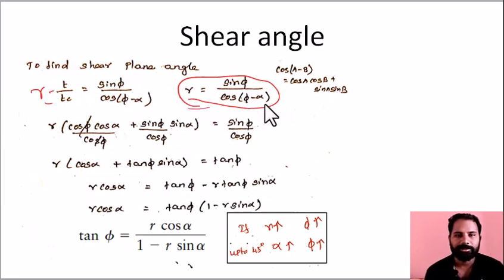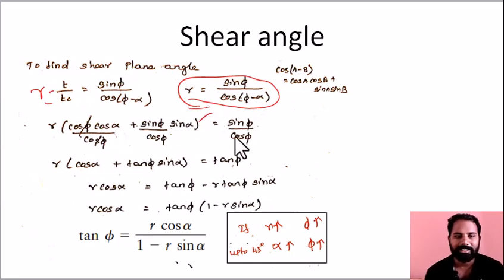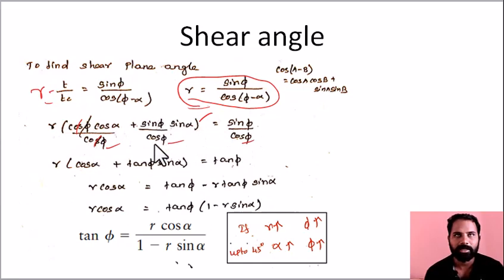We will expand cos(a minus b) as cos a cos b plus sin a sin b. The entire equation is then equal to cos φ. We will cancel cos φ by cos φ, and sin φ divided by cos φ is tan φ.